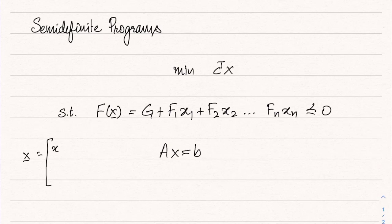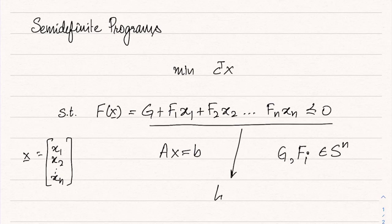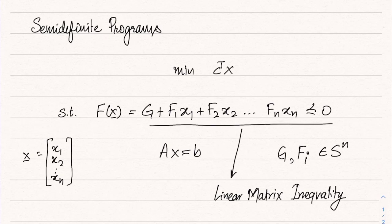Note that the vector x contains entries x1, x2 till xn. We require that g as well as all the fi's are symmetric, because only for symmetric real matrices have we considered eigenvalues and the negative semi-definite or positive semi-definite property. This particular kind of constraint — the negative semi-definiteness constraint on a matrix which is a function of x — is called the Linear Matrix Inequality, or LMI, because the left-hand side is a linear function of several matrices.